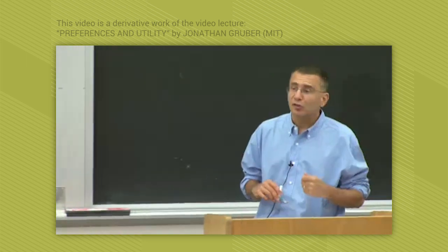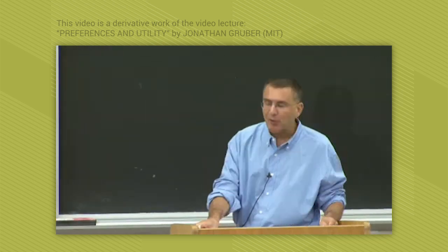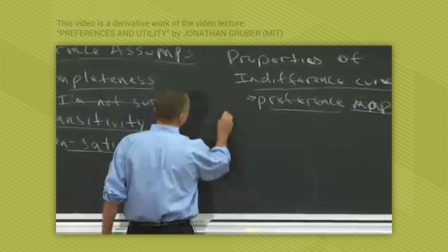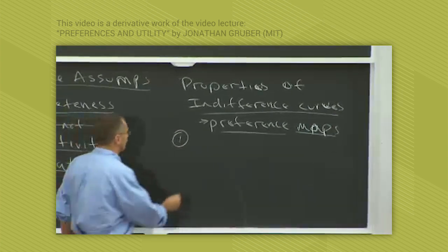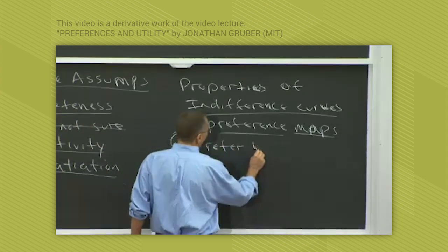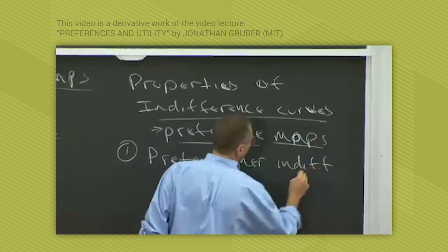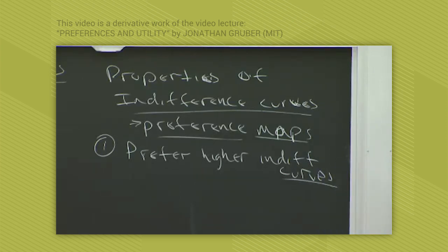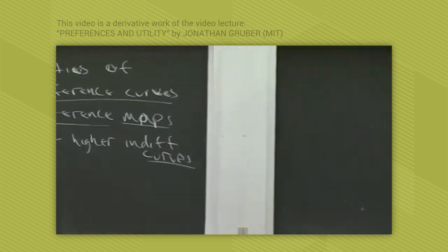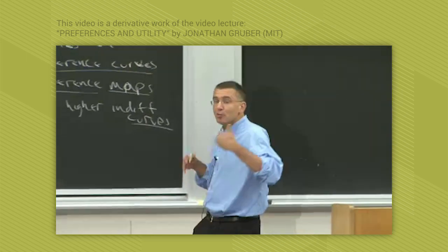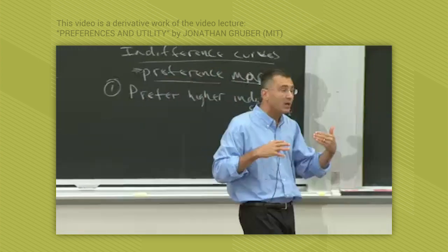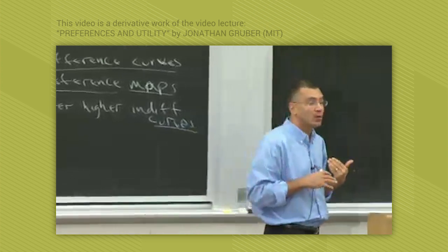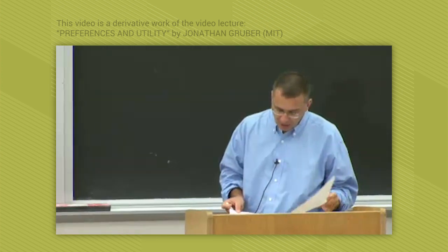So armed with those assumptions, there are four key properties of indifference curves. The first is that consumers prefer higher indifference curves. The further out the indifference curve, the more you prefer it. This comes naturally from the non-satiation assumption. Given that we've assumed non-satiation, you must always prefer an indifference curve that's further from the origin, because it's more and more is better.